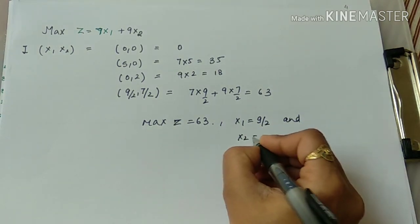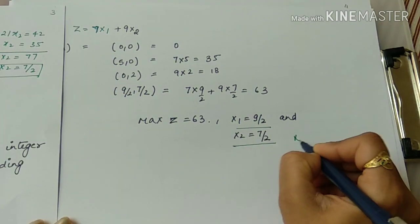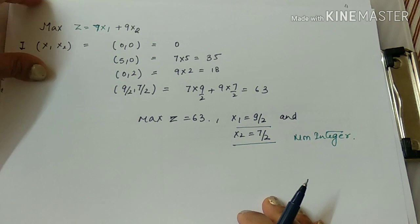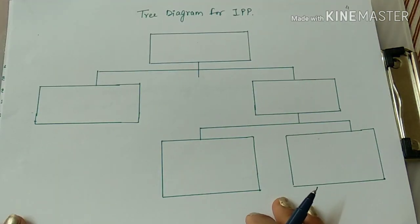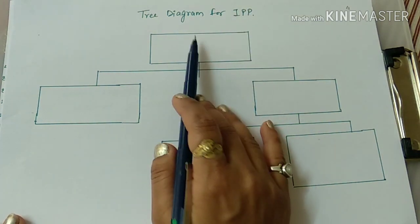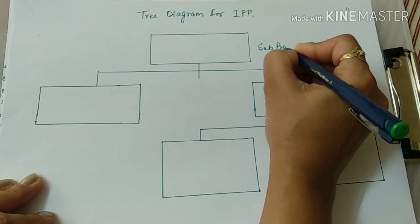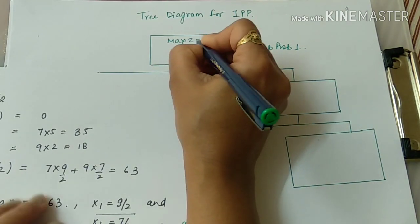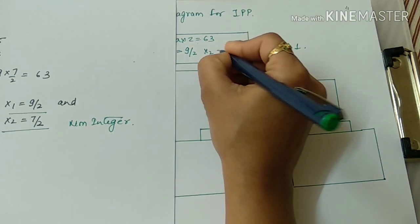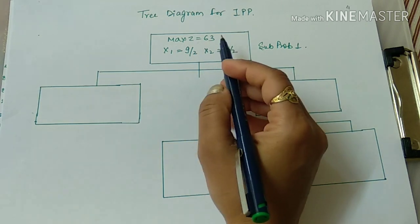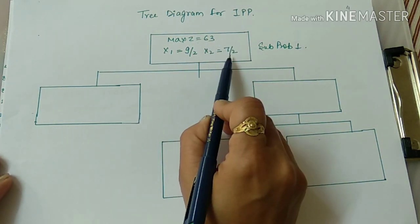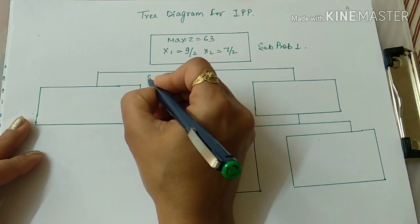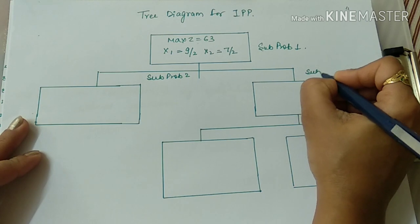When z equals 63, x1 equals 9/2 and x2 equals 7/2. The obtained solution is non-integer. So we have to solve it further. This is the solution of sub-problem 1. In this type of question you have to make a tree diagram of the integer programming problem and write the solution of each sub-problem — max z equals 63, x1 equals 9/2, x2 equals 7/2.